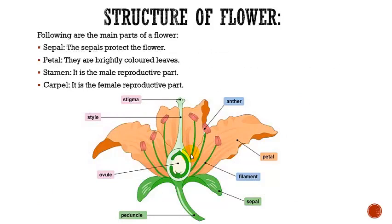Now, the structure of a flower. The following are the main parts of a flower: sepal, petal, stamen, and carpel. Now look at this beautiful diagram of the structure of a flower.